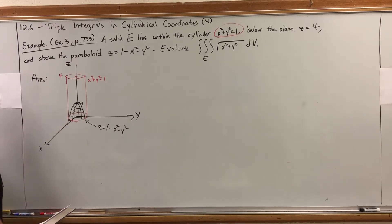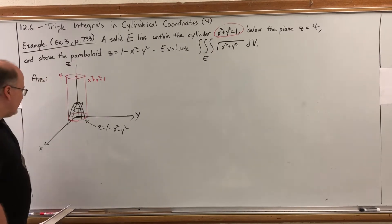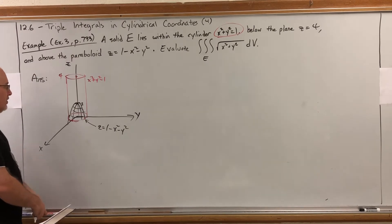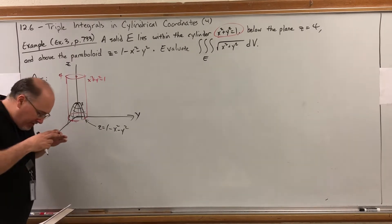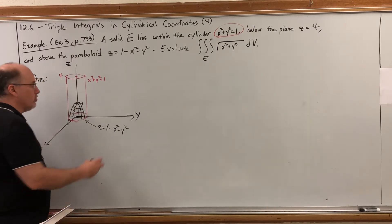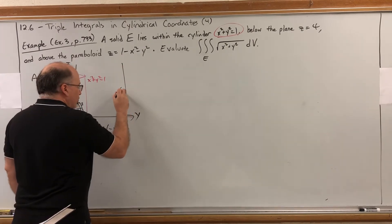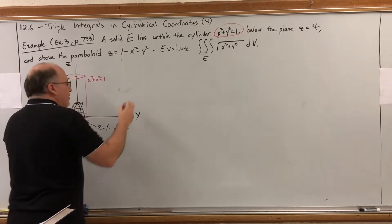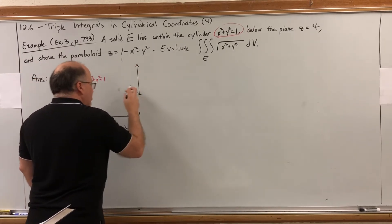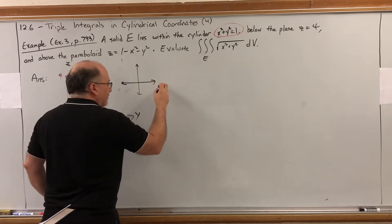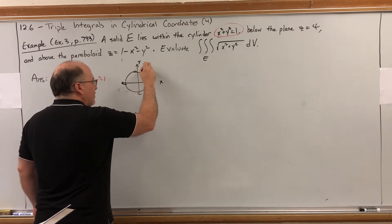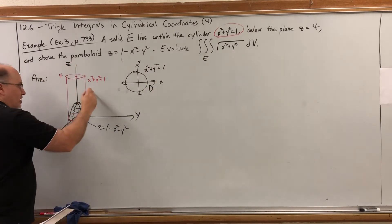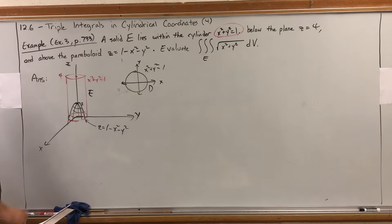The projection of this solid in the xy-plane is clearly a circle — looking straight down, all we see is the unit circle. So our region D is the unit disk, and this is our solid E. Now let's set up the triple integral.